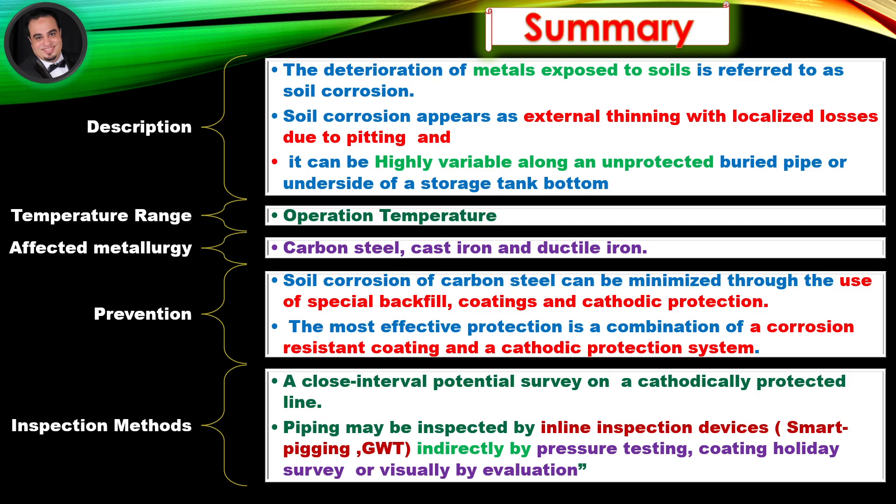Temperature range: operating temperature. Affected metallurgy: carbon steel, cast iron, and ductile iron. Prevention: Soil corrosion of carbon steel can be minimized through the use of special backfill, coatings, and cathodic protection. The most effective protection is a combination of a corrosion-resistant coating and a cathodic protection system.